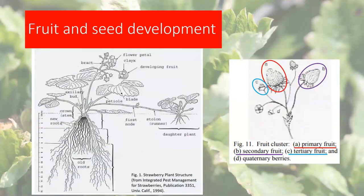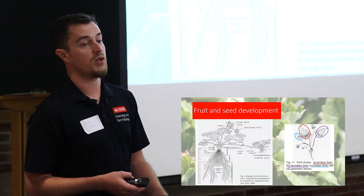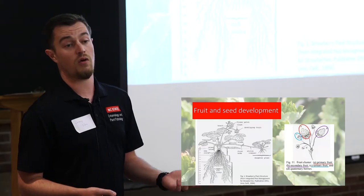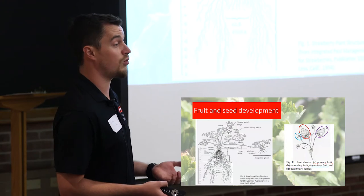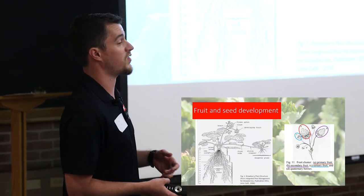Strawberry plants are a little complicated, but most of the root mass occurs in about the top six inches of soil, coming together into a crown region that gives rise to all the different shoots. You'll get your leaves, bloom clusters, and also runners that will generate daughter plants. That's generally how strawberries are propagated — through these daughter plants.